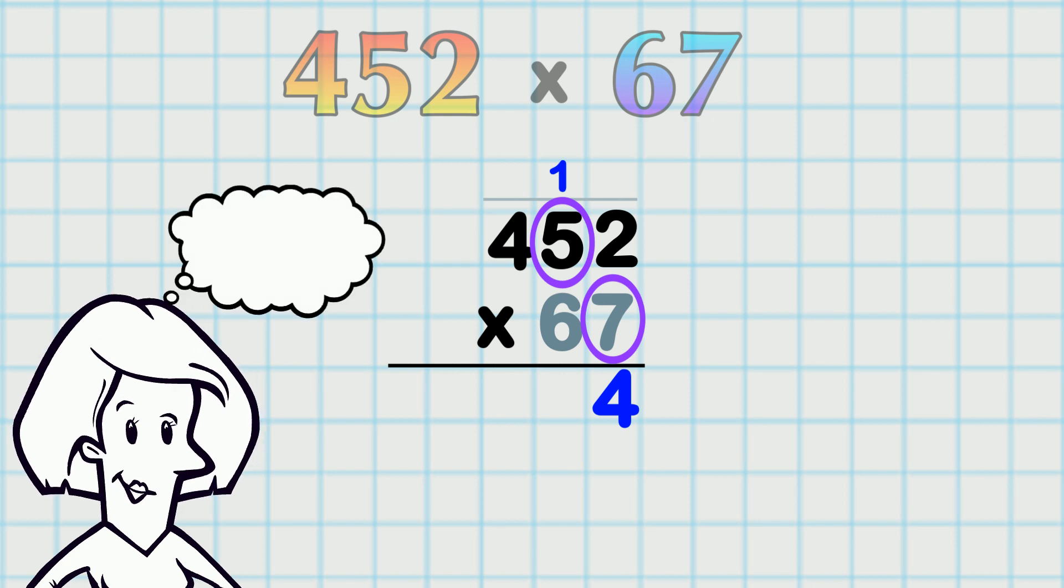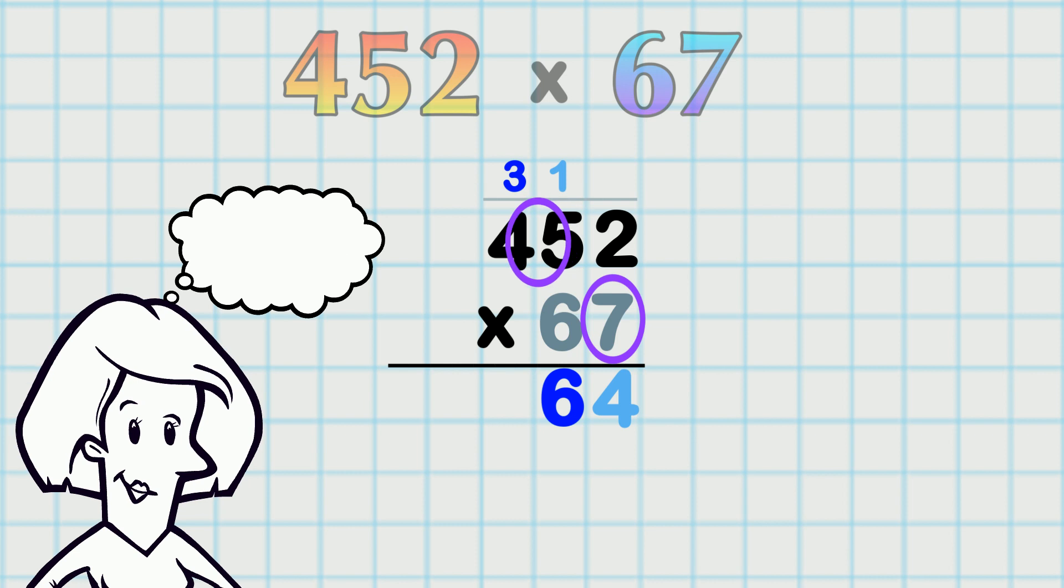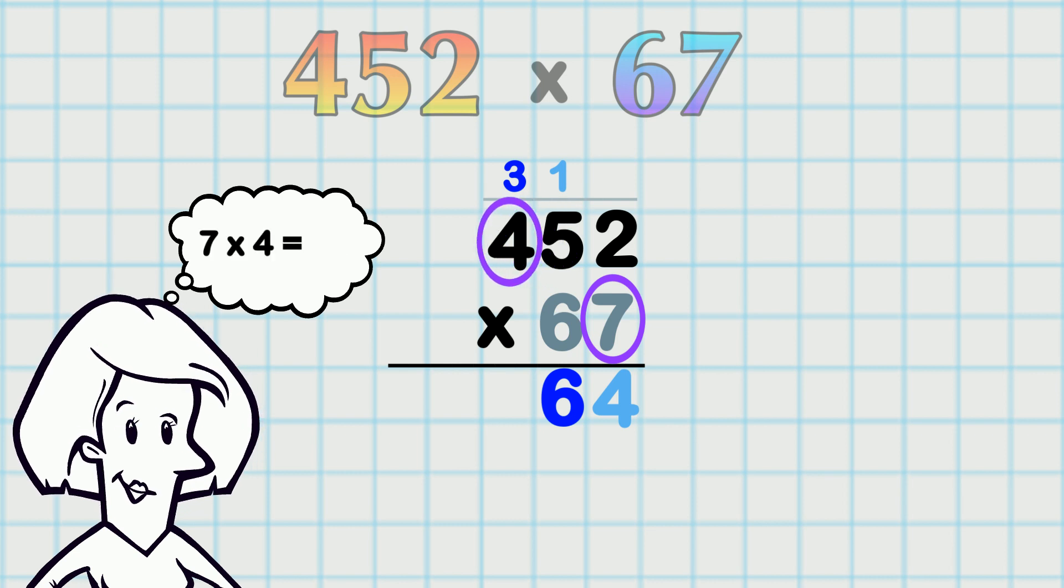Now we do 7 × 5, that's 35! And add this 1 which makes 36! And now 7 × 4, 28. And we add in this 3, so that gives us 31!